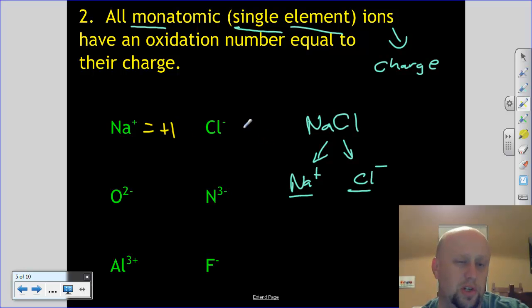So sodium's charge is plus one. Its oxidation number is plus one. Chlorine's charge is negative one, or one negative, so its oxidation number is negative one. Oxygen is going to be negative two in this case. Nitrogen is going to be negative three.